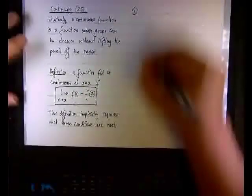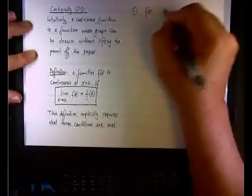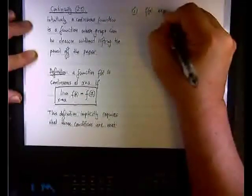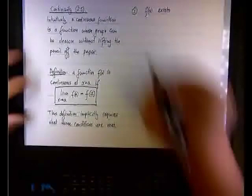Condition one, look at the right side, we have f(a), so one condition is that f(a) exists. In other words, you don't have a hole, you don't have an asymptote over there.